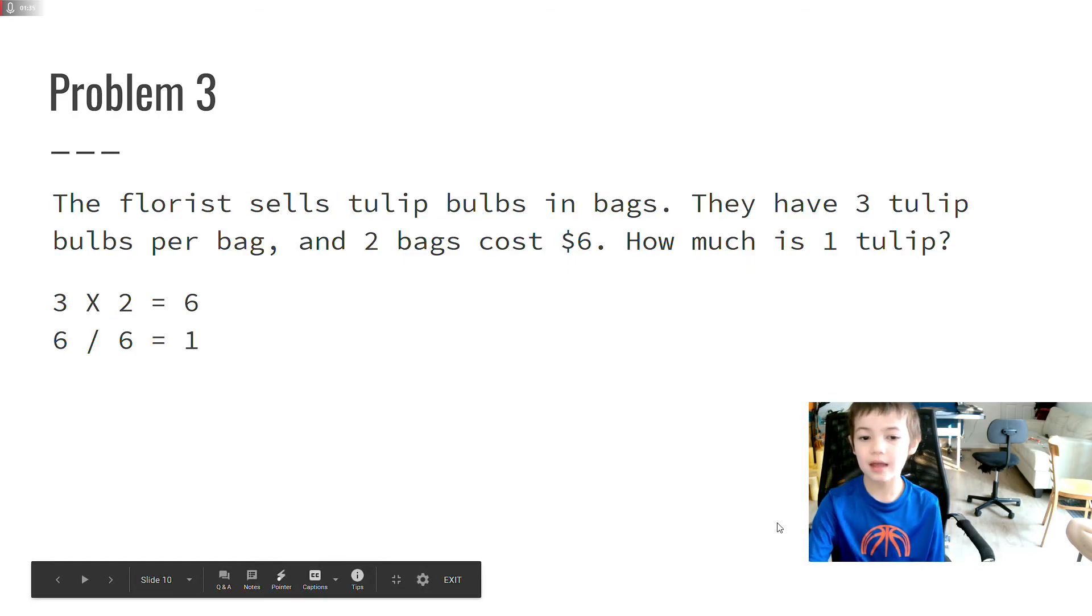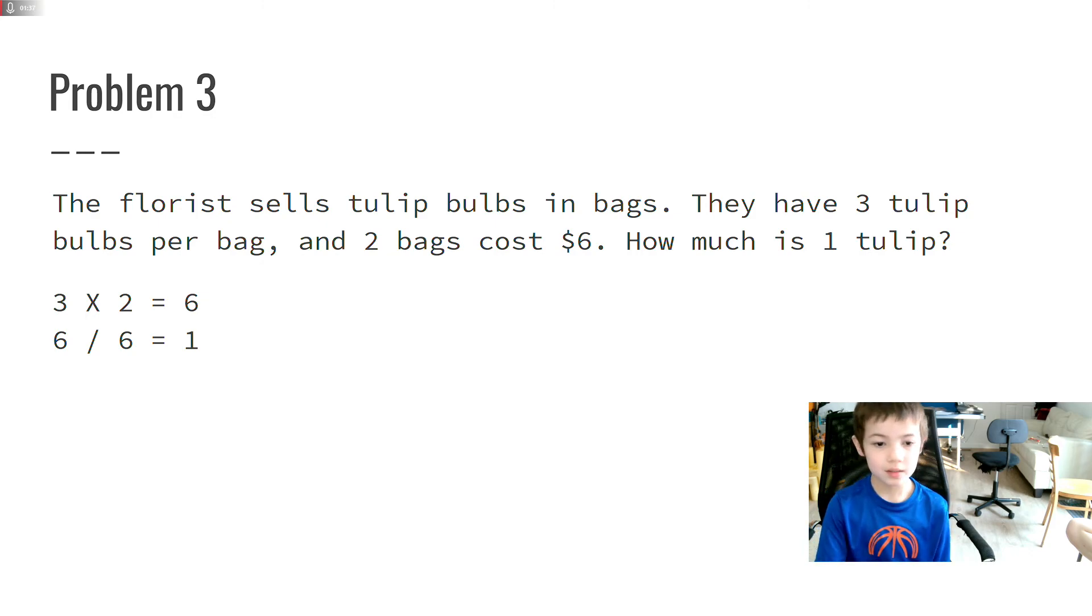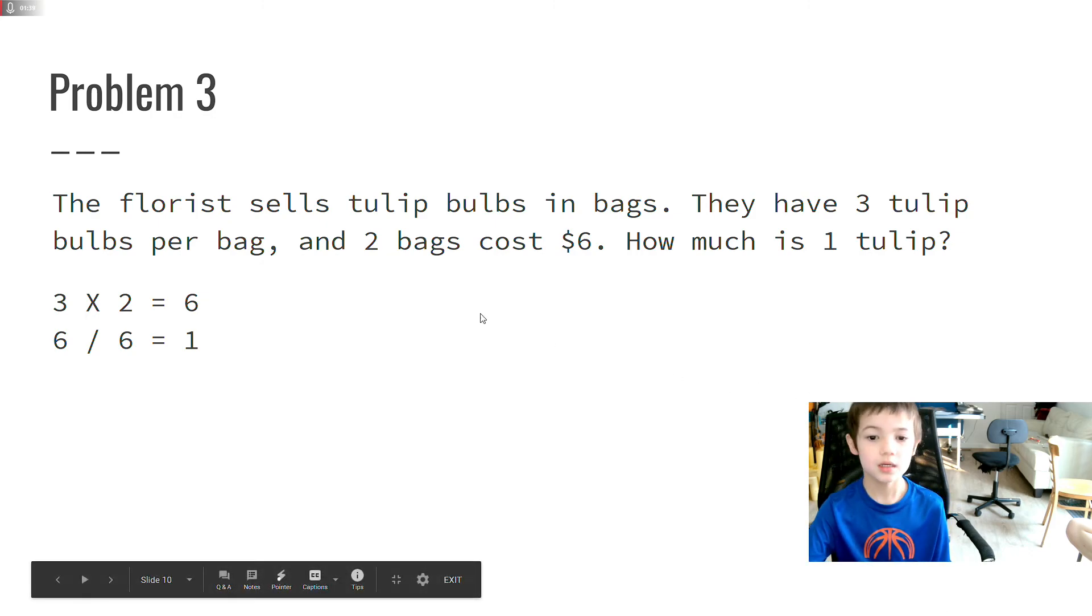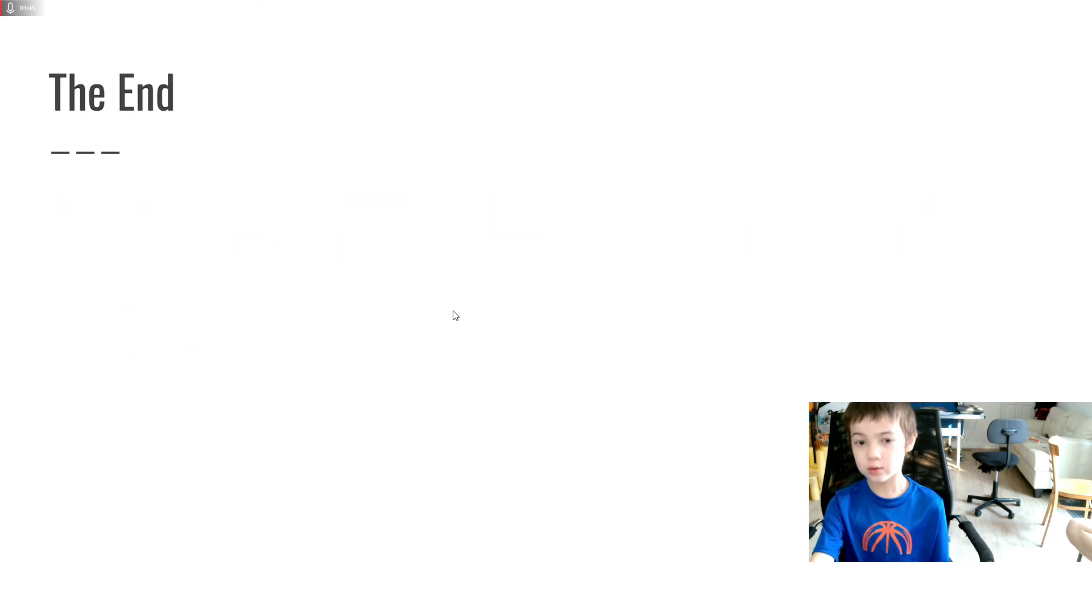And then you want to take that number, 6 divided by 6, because 2 bags cost $6 and you have 6 tulips total. So 6 divided by 6 gives you the cost per tulip, which equals $1. The end.